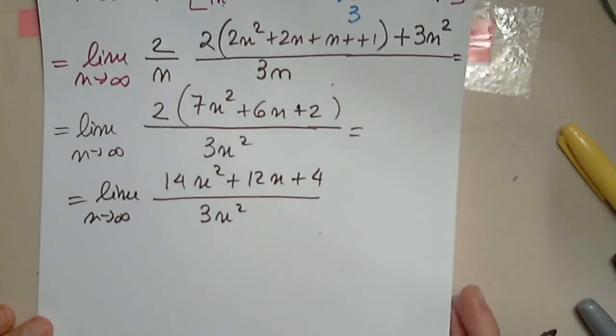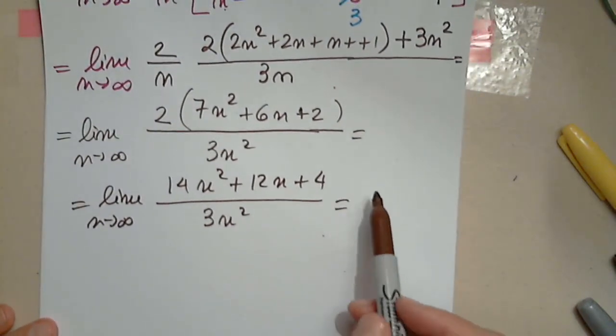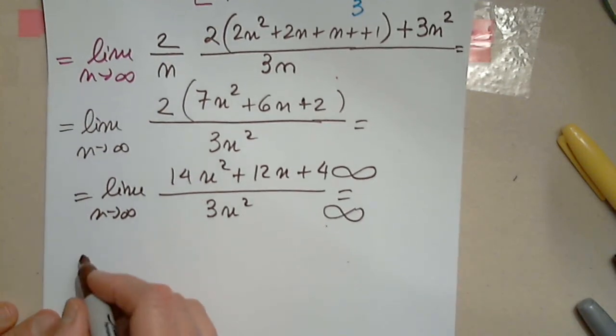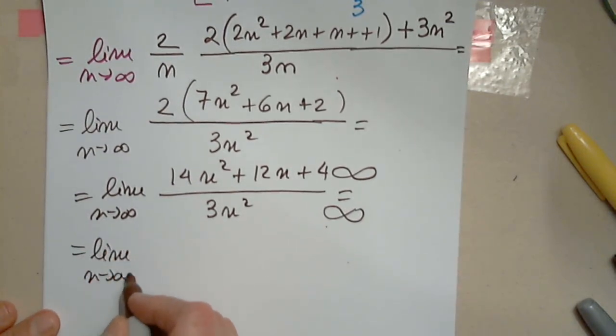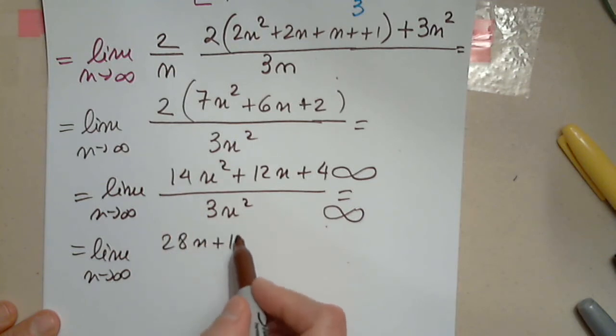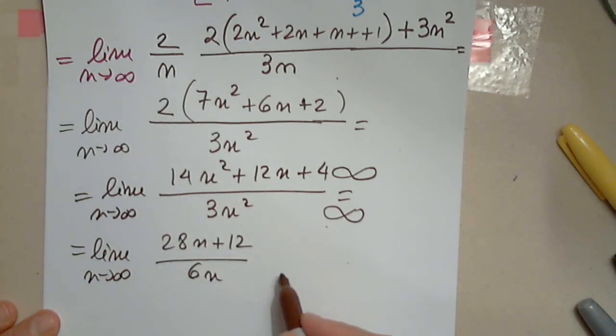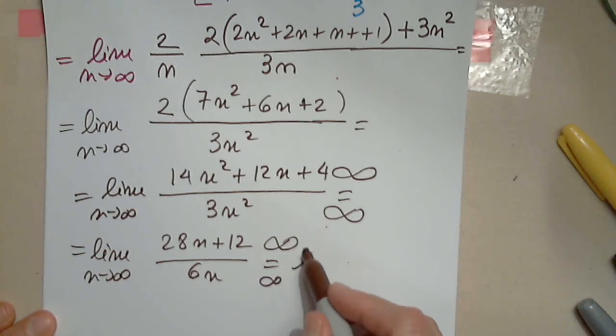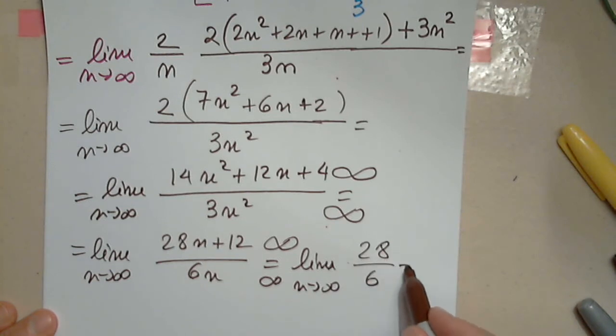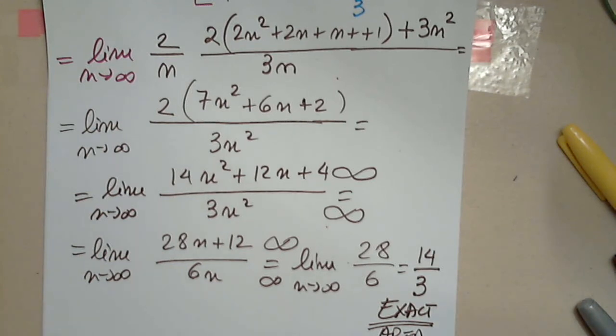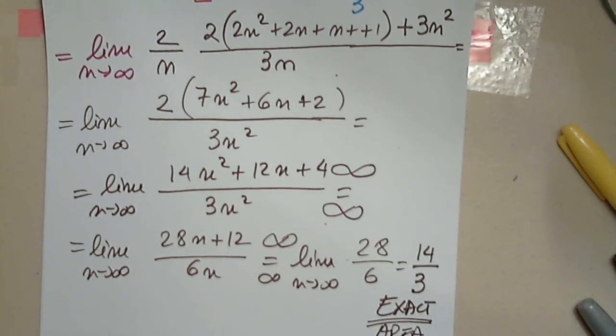We already know the answer from pre-calc, but let's say we don't remember. Infinity over infinity, L'Hôpital's rule. 28n plus 12 over 6n. Again, let's say we don't know, L'Hôpital's rule again. Limit as n approaches infinity: 28 over 6, which is 14 divided by 3. This is the absolute exact area under the graph of x squared plus 1 between 0 and 2. And I need a sip of water.